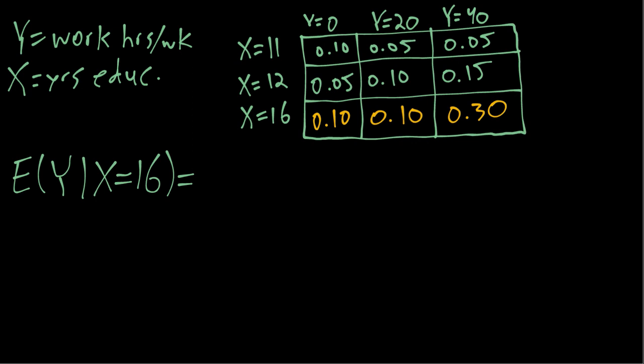So the first possible value of Y is 0. Our first term will be 0 times the conditional probability of 0 for our X equals 16 subpopulation. We can see because it's 0 times something, that term will end up just being 0 regardless of the probability, so we don't need to compute that probability.